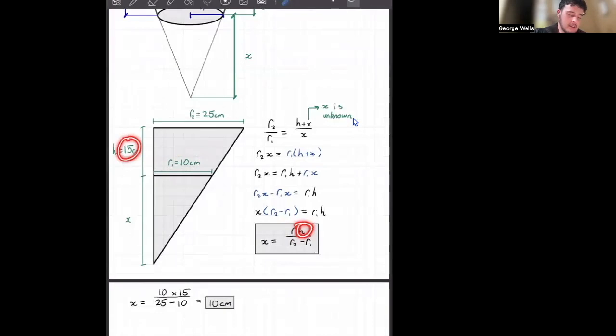r1 is equal to 10. h is equal to 15. And r2 is equal to 25. Which I've got all in here to give us a final answer or not final answer, but x being equal to 10 centimeters.